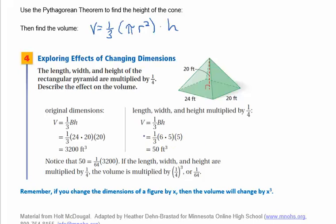Here's an example about exploring the effect on volume when you multiply all dimensions by one-fourth. The original volume is one-third times 24 times 20 times 20, which gives 3,200 cubic feet. After multiplying all dimensions by one-fourth, the new volume is 50 cubic feet. Dividing 50 by 3,200 shows it's one-sixty-fourth as big — which is the same as one-fourth cubed.